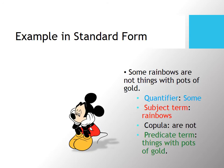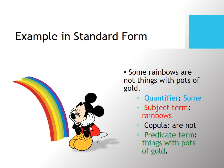Previously we said 'not every rainbow has a pot of gold.' You have to do some finagling to get the standard form translation, but it clearly means to exclude some rainbows from the class of things that have pots of gold. So the proper translation is 'some rainbows are not things with pots of gold.' The quantifier is 'some,' the subject term is 'rainbows,' the copula is 'are not,' and the predicate term is 'things with pots of gold.' This is the one case where the copula 'are not' is used.